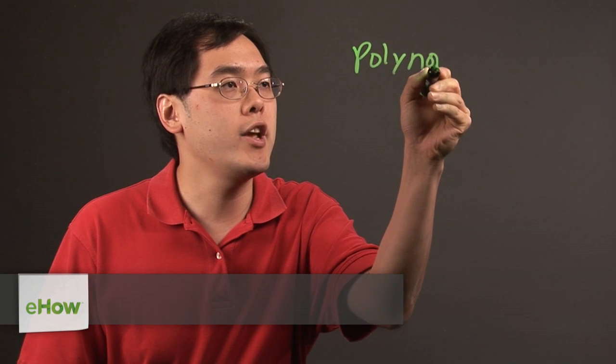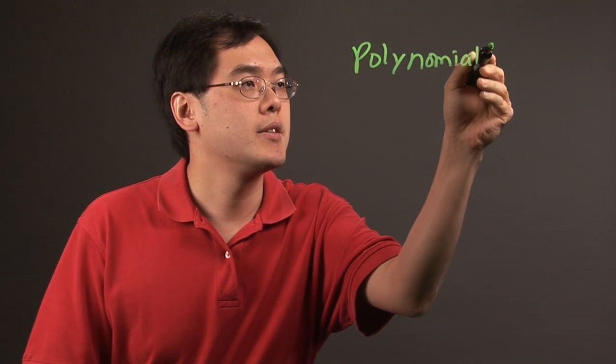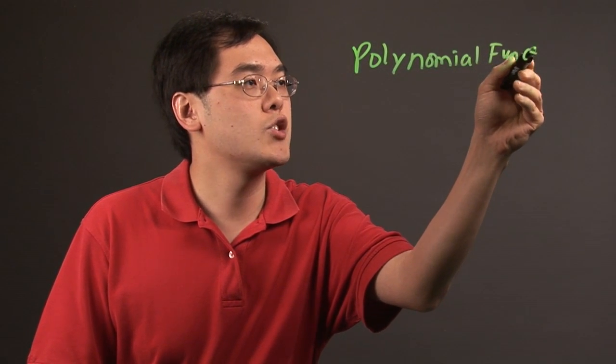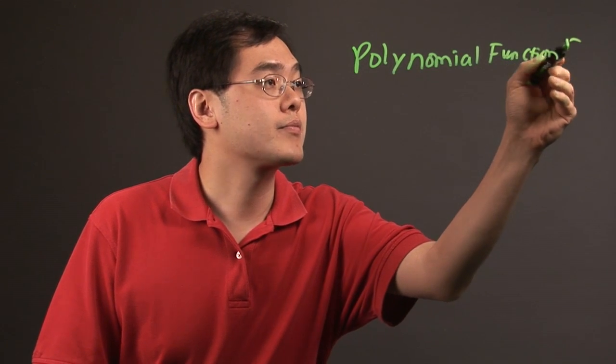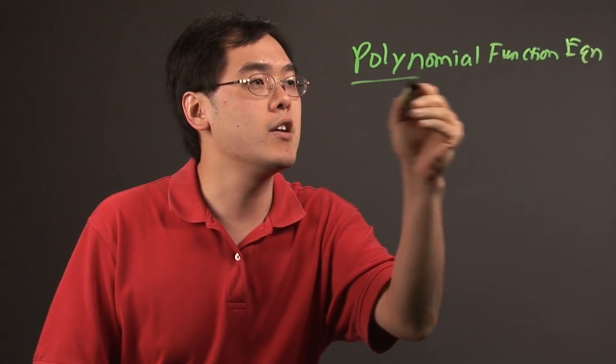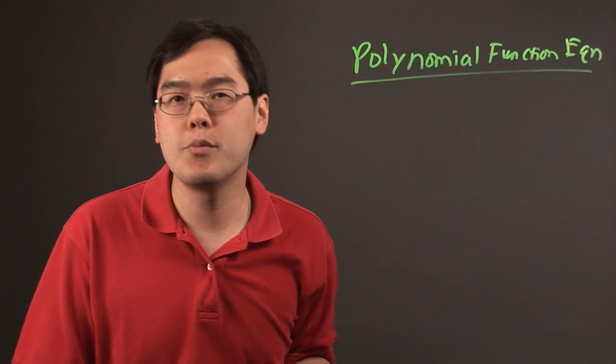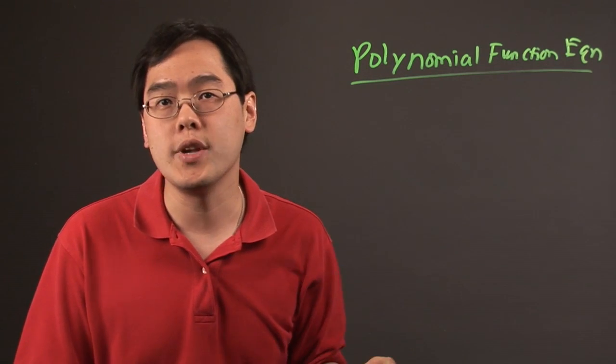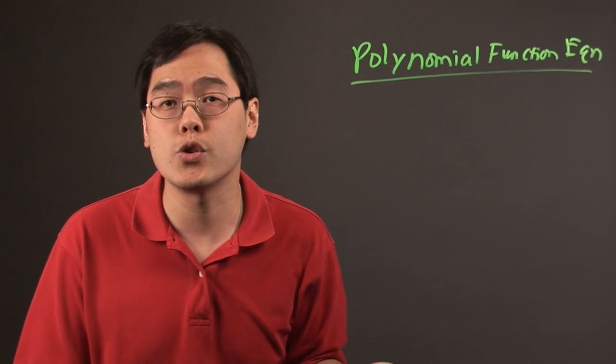Now, a polynomial function equation is somewhat of a circular definition because the idea here is simply you're going to take any polynomial function and you're going to turn it into an equation by setting it equal to some kind of value.